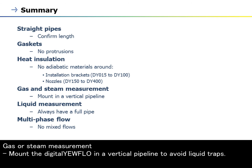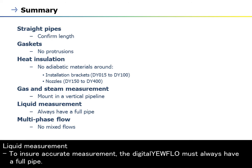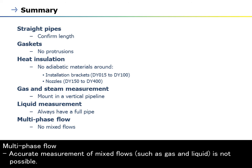Gas or steam measurement: mount the digital yearflow in a vertical pipeline to avoid liquid traps. Liquid measurement: to ensure accurate measurement, the digital yearflow must always have a full pipe. Multi-phase flow: accurate measurement of mixed flows, such as gas and liquid, is not possible.